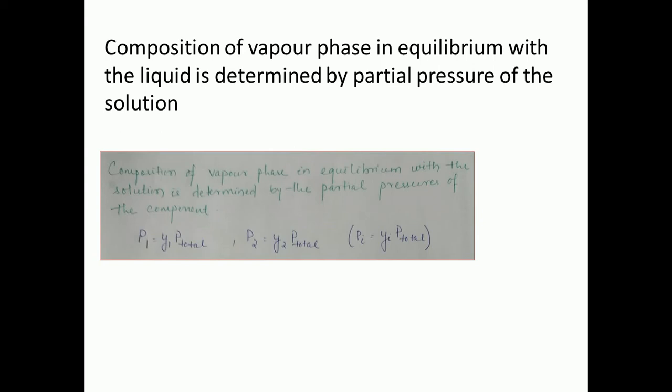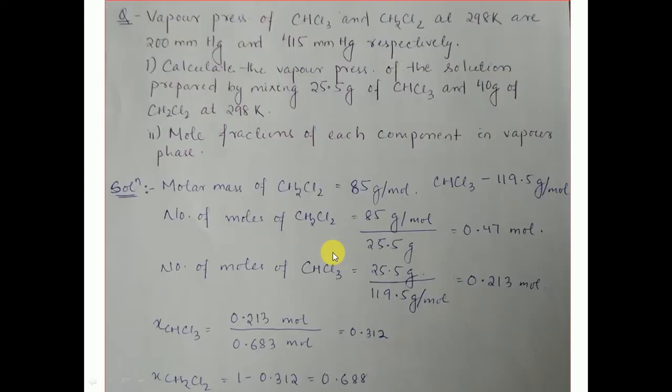We can write the partial pressure of component 1 as y1 × P total, and the partial pressure of component 2 as y2 × P total, where y1 and y2 are the mole fractions in the gaseous state.